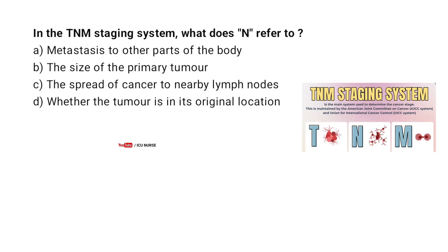In the TNM staging system, what does N refer to? A. Metastasis to other parts of the body. B. The size of the primary tumor. C. The spread of cancer to nearby lymph nodes. D. Whether the tumor is in its original location.